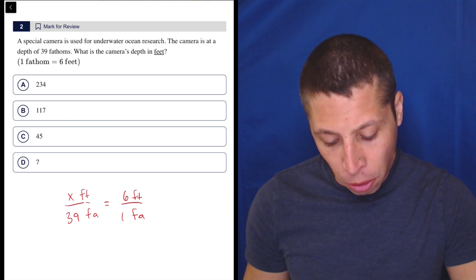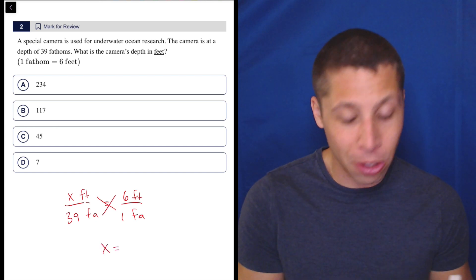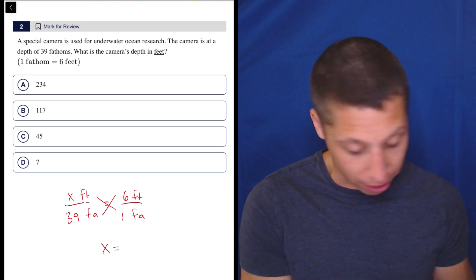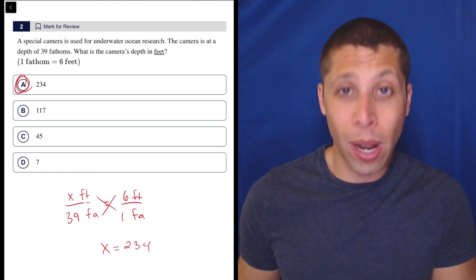Then we can just cross multiply and x times one is x, six times 39 is probably 234. But you can check. So 39 times six is indeed 234. And that's it. That's the whole question.